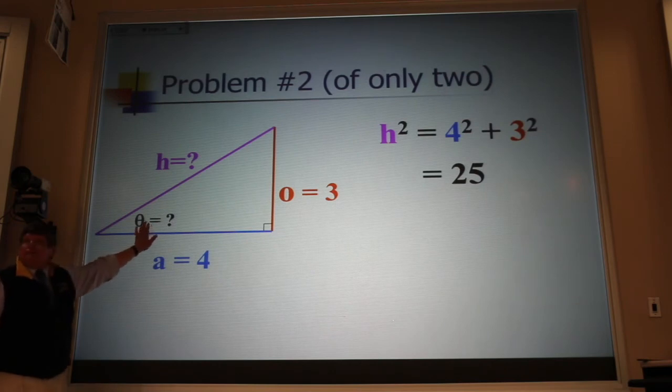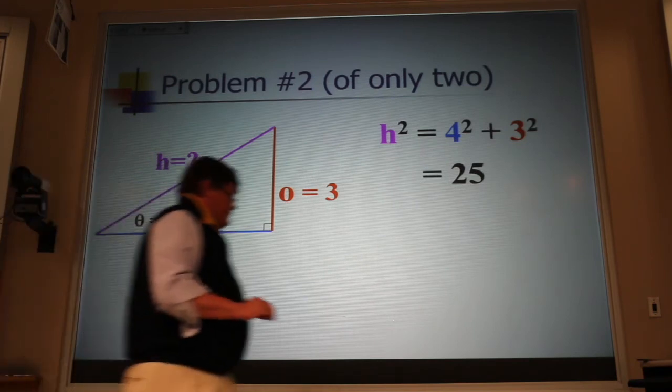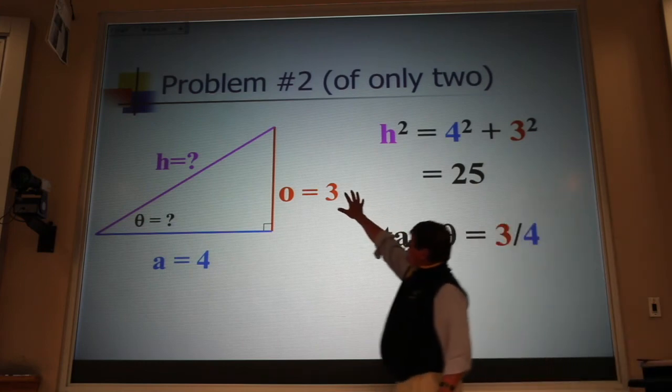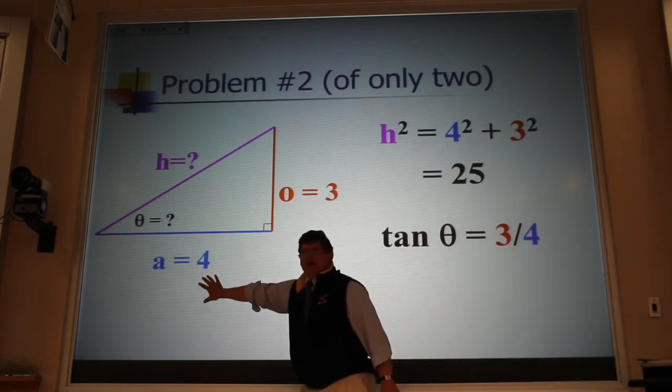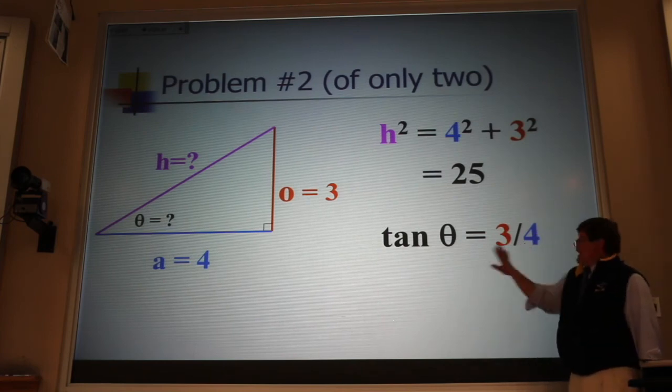Now, what about this angle? We've used the sine and we've used the cosine. The only trig function we haven't used yet is the tangent. And the tangent, you'll recall, is the opposite side over the adjacent side. So the tangent of that angle is equal to 3/4.